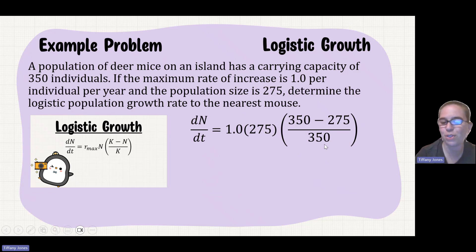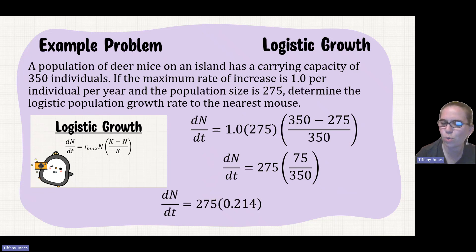1 times 275, of course, is giving me 275. 350 minus 275 will give me 75. If I divide 75 by 350, I get 0.214. And then when I multiply that, I get 58.92 equals 59.